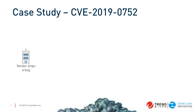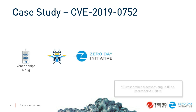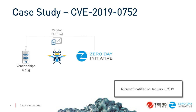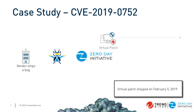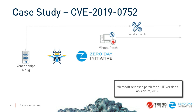The ZDI also has internal researchers. In this case, ZDI researcher Simon Zuckerbrot found an Internet Explorer bug on December 31st, 2018. We reported it to Microsoft on January 9th and shipped our virtual patch on February 5th, 2019. Microsoft shipped their patch on April 9th, 2019 — some time after the virtual patch was already available.